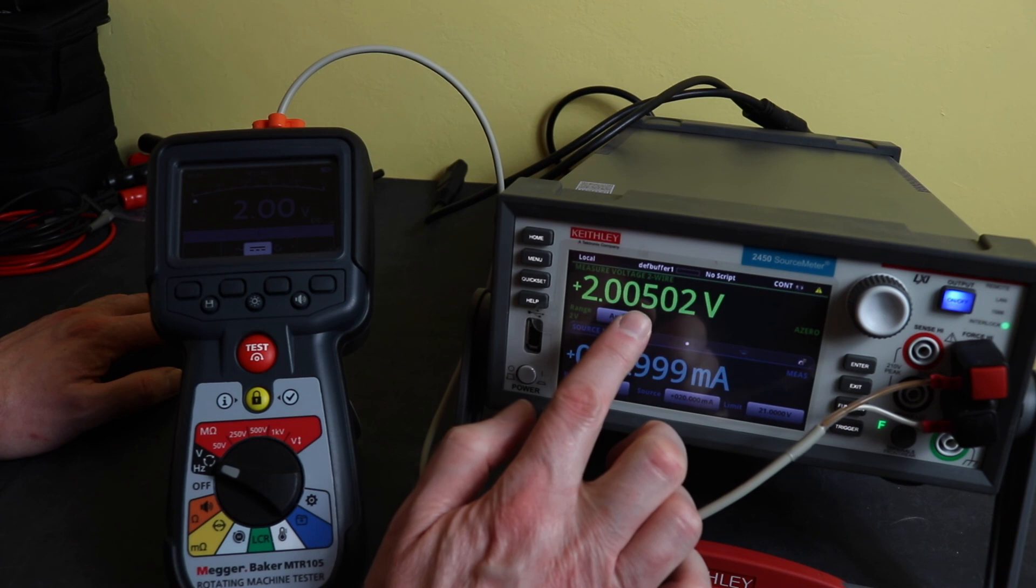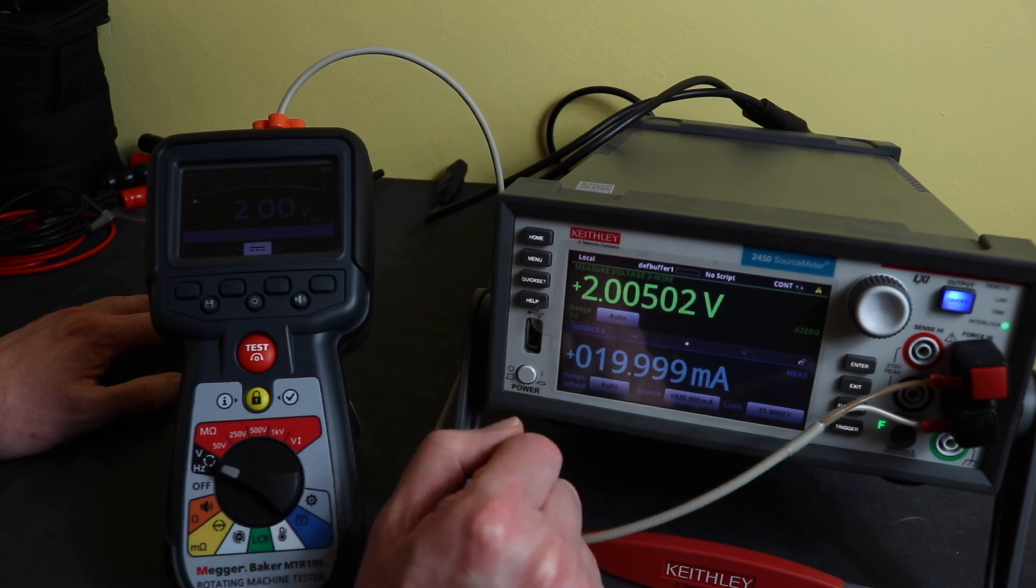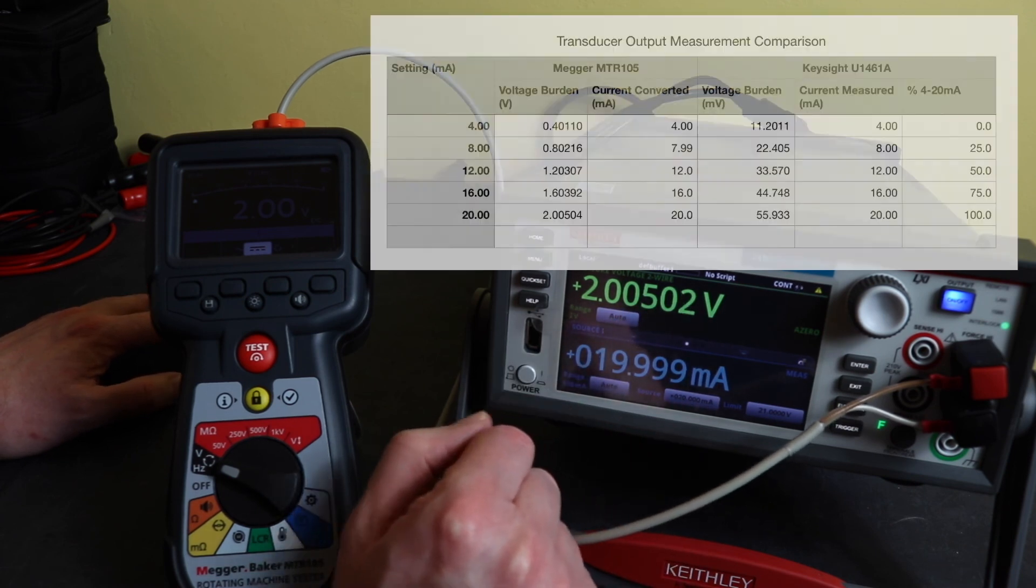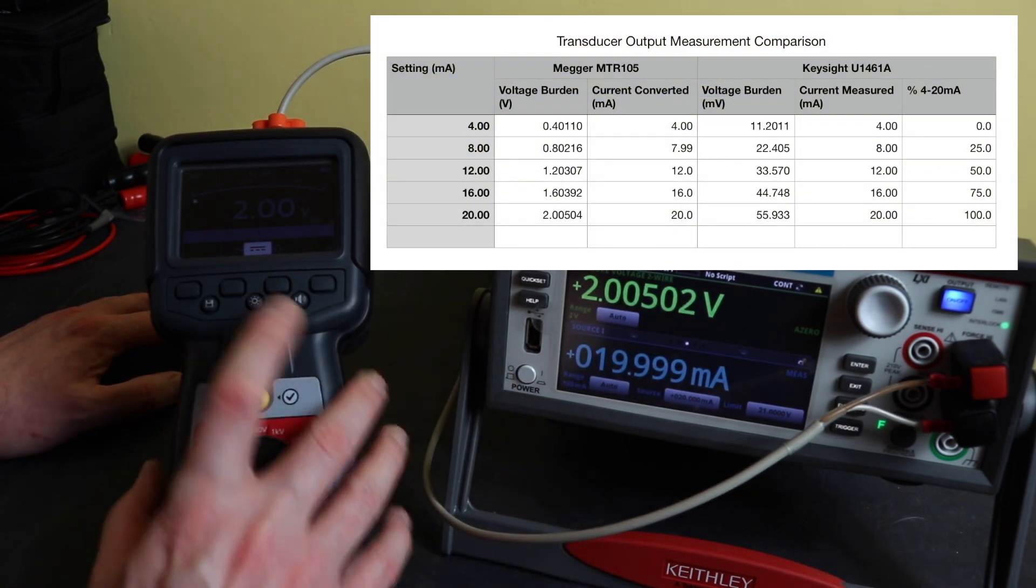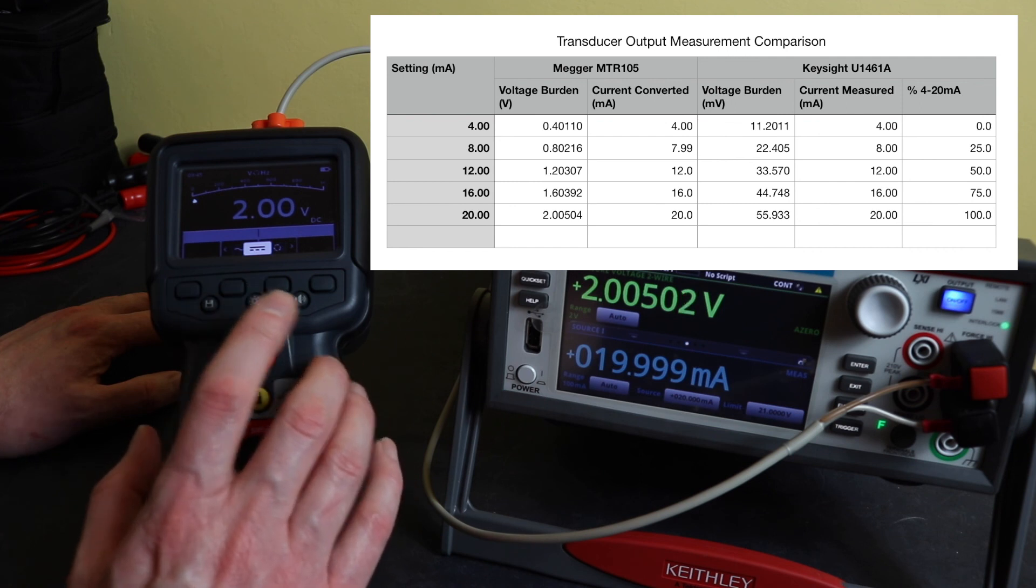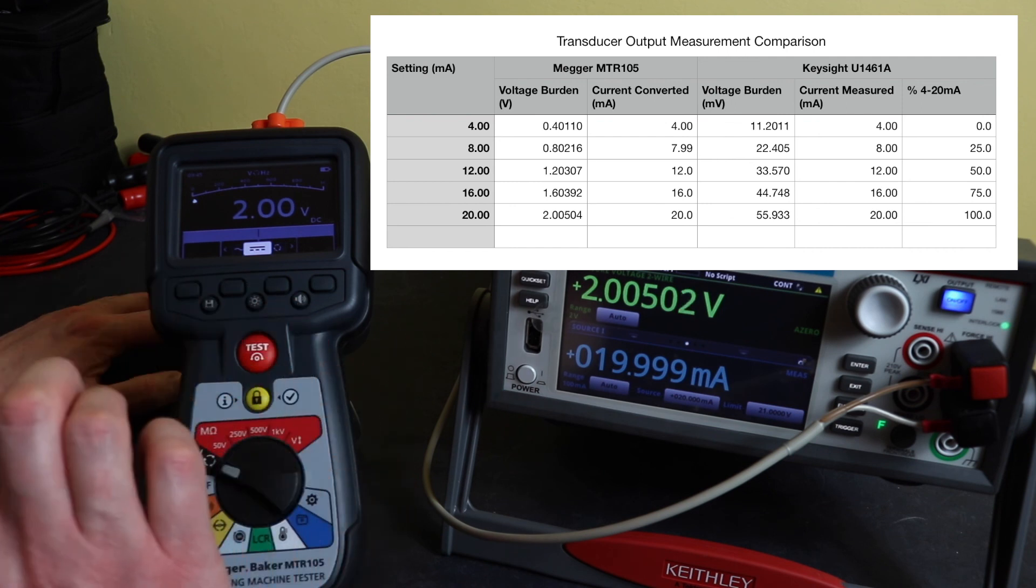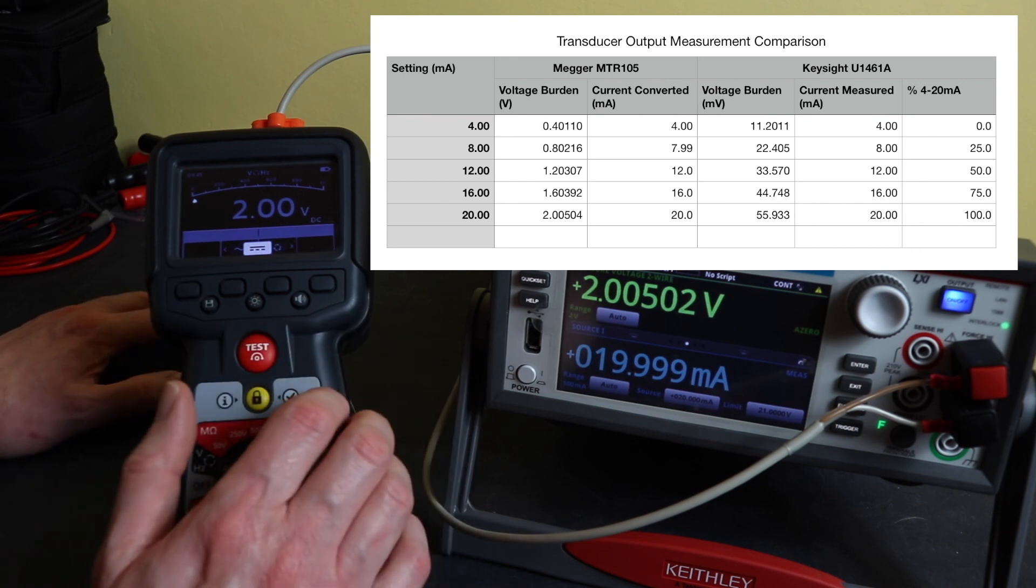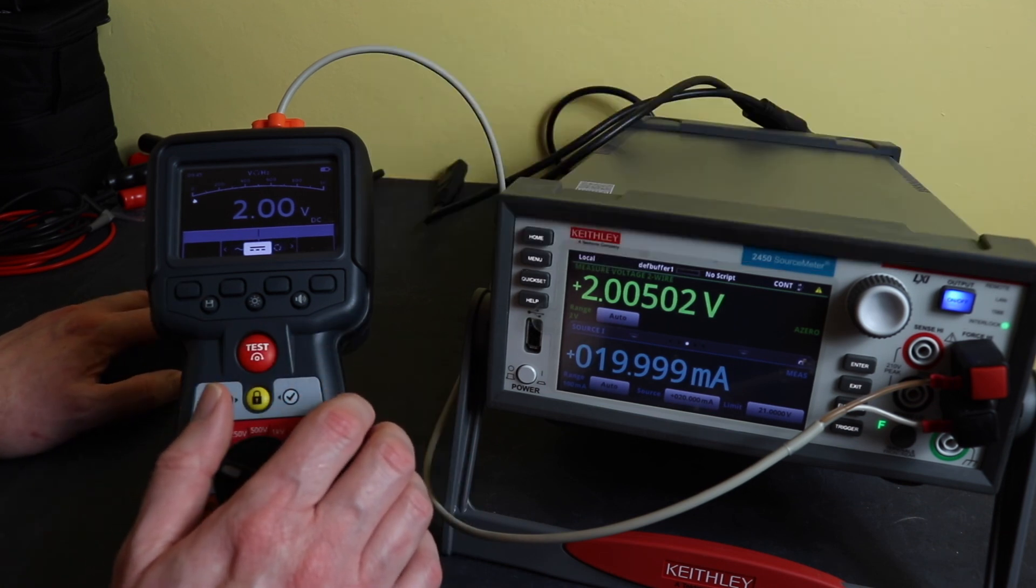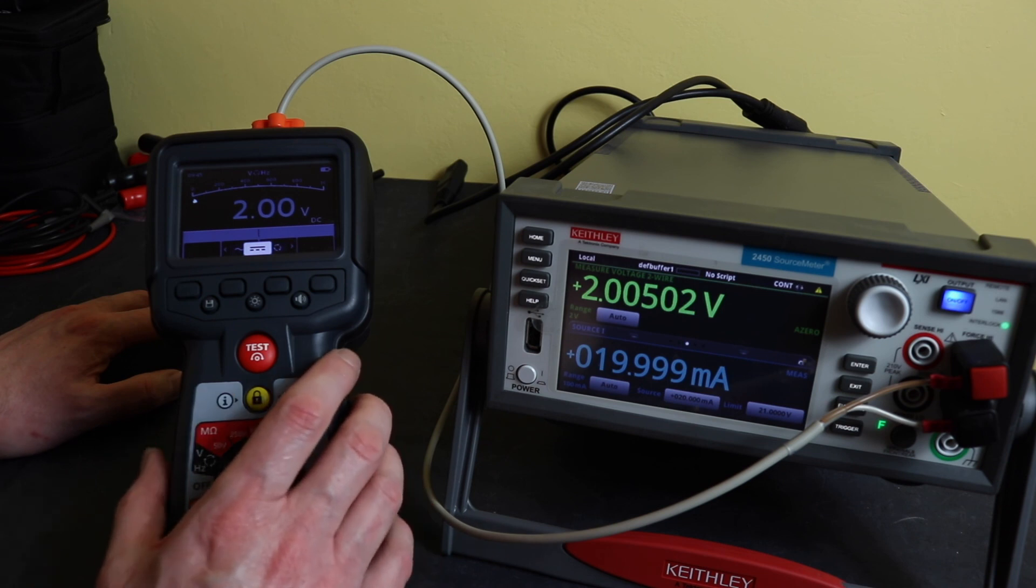Okay what I'll do is I'll stick a table up with the results comparing it to the Keysight. Obviously I do lose a decimal point when I'm doing it with this in comparison to the Keysight instrument, there's a bit more accuracy on there. These transducers will be 0.5 accuracy on them anyway so they're not the most accurate of devices so I kind of feel that testing it in this way would be fairly realistic.